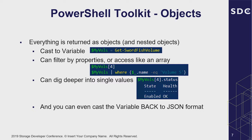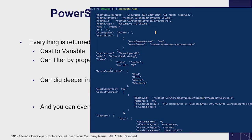If I do a Get-SwordfishVolume, it gives me back a list of all my volumes. I can throw that into a variable and walk through it: give me just volume four, or give me volumes where the pipeline object dot name equals volume five. I can filter by volumes bigger than one gigabyte, or where the provisioning policy equals thin. I can even cast the variable and push it back to JSON to see what the raw JSON code looks like — and if I convert volume four back to JSON, that's what the raw device JSON looks like.